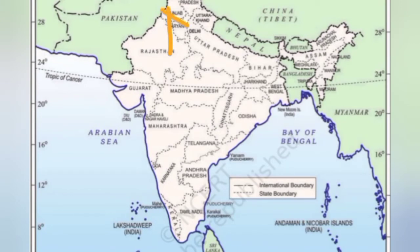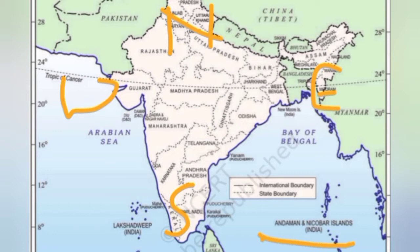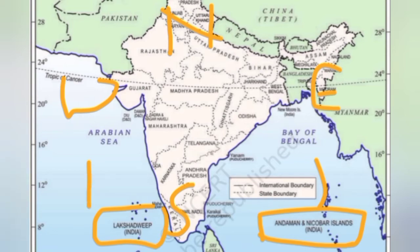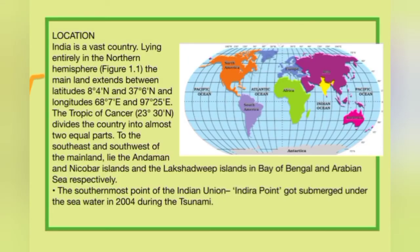Looking at the map — this is North, this is South, this is East, and this is West. To the South-East of India lie the Andaman and Nicobar Islands, located in the Bay of Bengal. Similarly, to the South-West of India are the Lakshadweep Islands, located in the Arabian Sea.